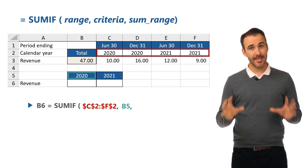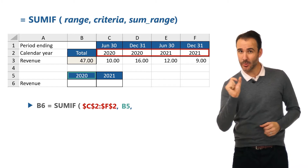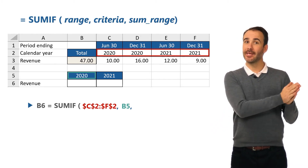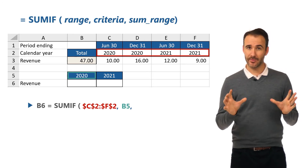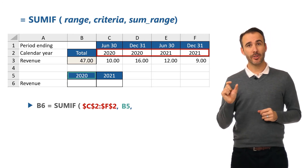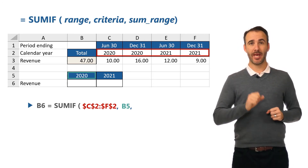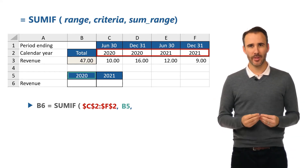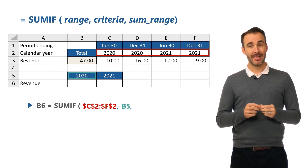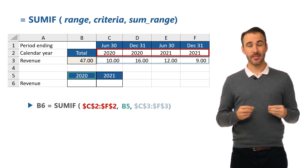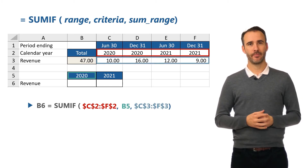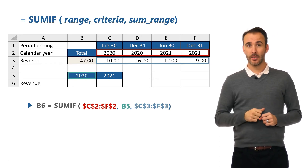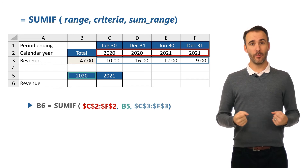We are finding the criteria in B5 — that's the year 2020 — within the range, which is the calendar year in C2 to F2. Make sure we anchor C2 to F2. We then want to sum all of the revenue within 2020 from C3 to F3. This is the sum range.